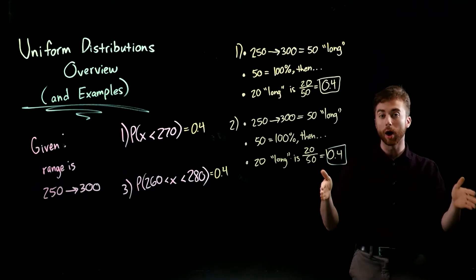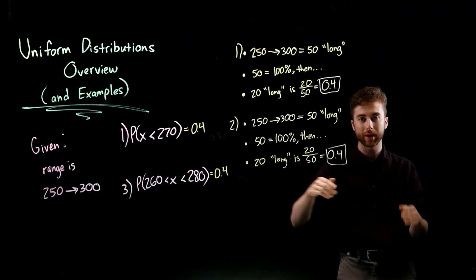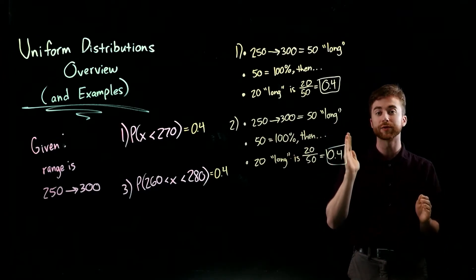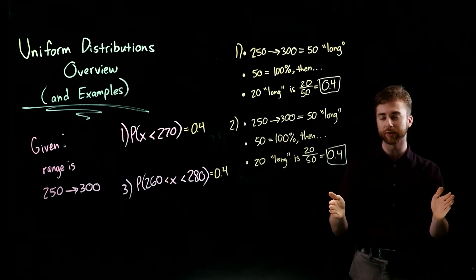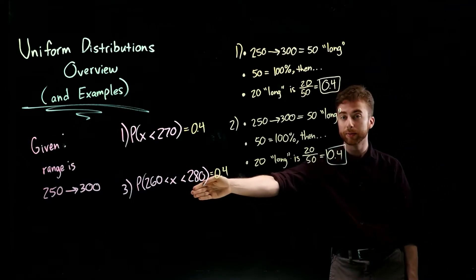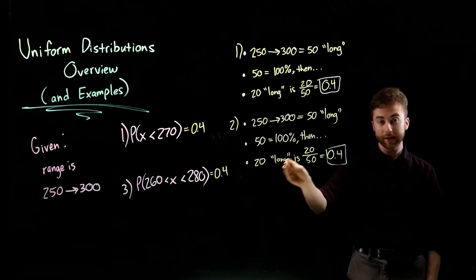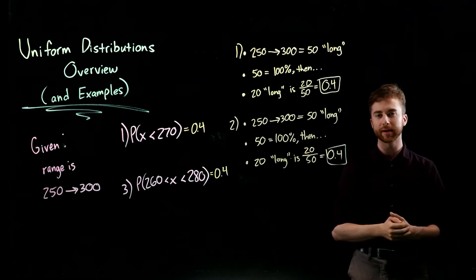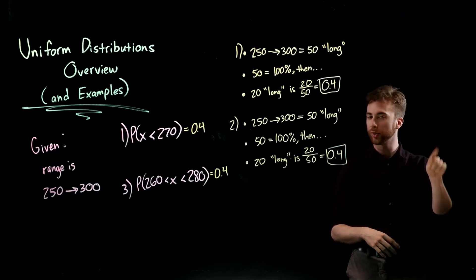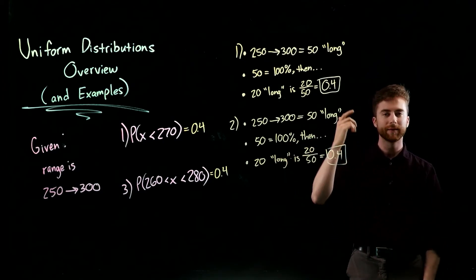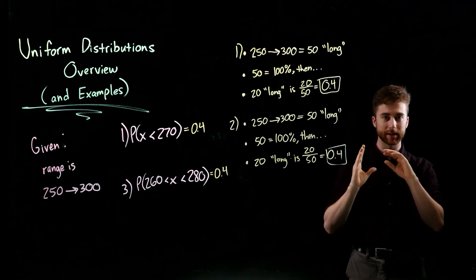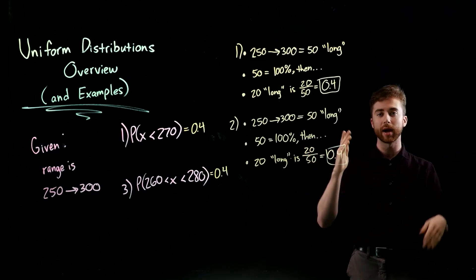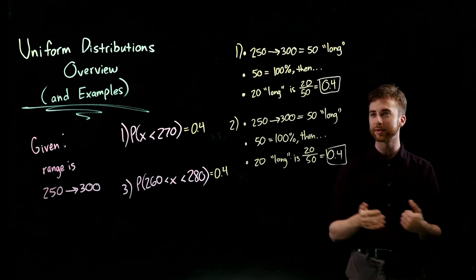For example 3, the full range is 50 so that's 100%. We want 260 to 280, which is 20 long, so 20 out of 50 is again 40% — the same answer as before. As long as you draw your number line and rectangle, you can use either method: multiply length times width using the density function height of 1 over B minus A, or simply find what percentage of the total range your section covers. Both give the same answers. Hope that helped — thank you for watching.